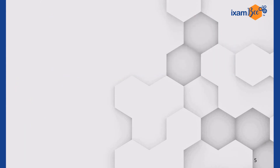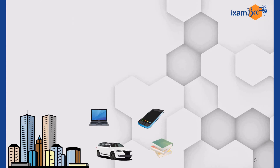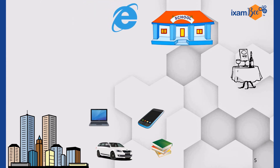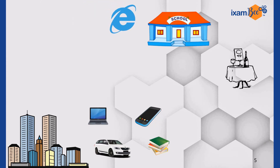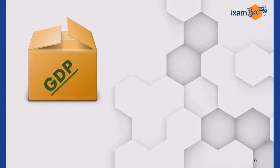For instance, we produce real estate, laptops, cars, cell phones, books, etc. in a year, and services like internet consumption, education, dining, and so on. When we box all these goods and services together at one place, what you get is GDP.